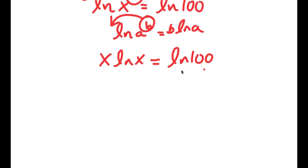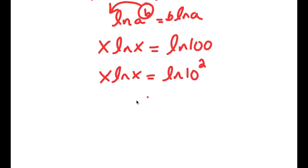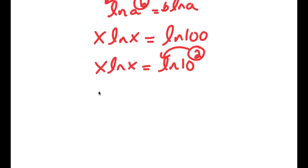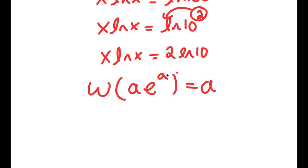Now ln 100 is the same as ln of 10 squared, and applying the log power rule again I get x times ln x equals 2 times ln 10. There's something called the Lambert W function: if I take W of a times e to the power of a, this equals a. So if there's something in the form a times e to the power of a, applying W gives a.